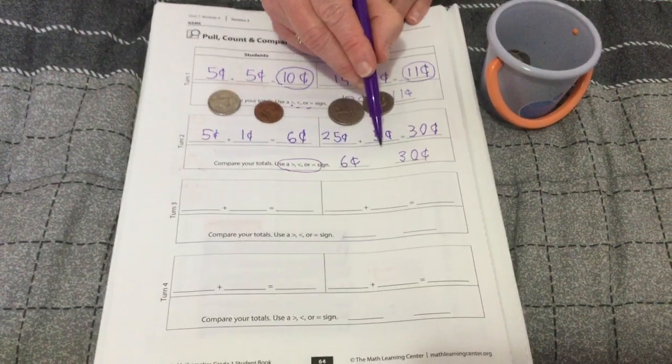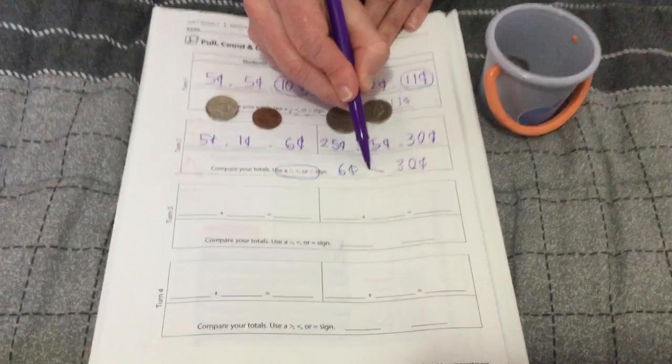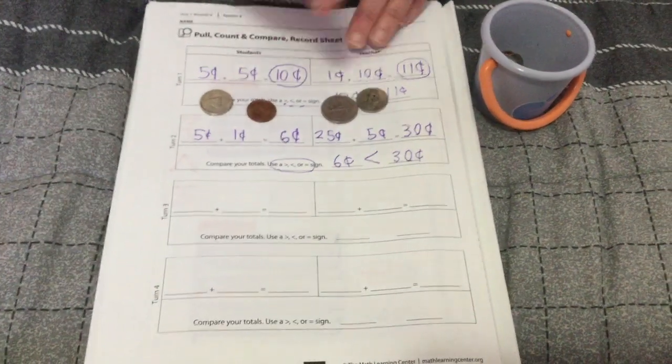Which symbol should go in between six and thirty? Did you come up with the less than symbol? You would be right.